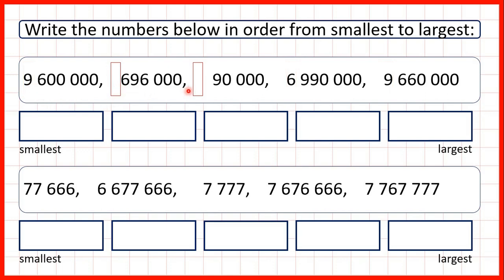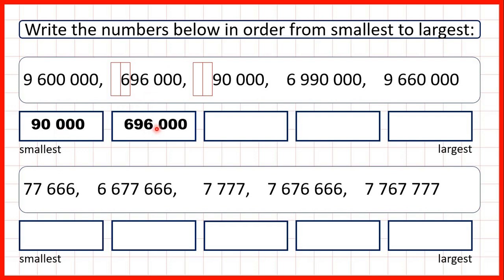But these two numbers don't have any digits in the millions. So when we look across to the hundred thousands, we can see that this number has 6 in the hundred thousands, but this number doesn't have any hundred thousands. So we know that 90,000 is the smallest number, and then 696,000 is next smallest.